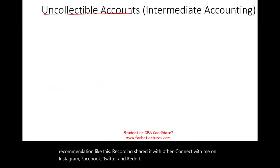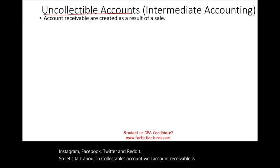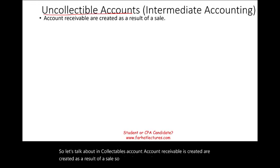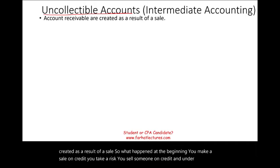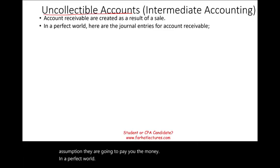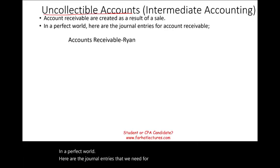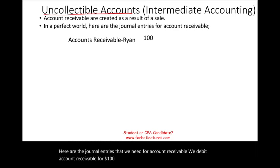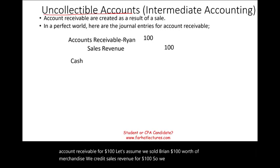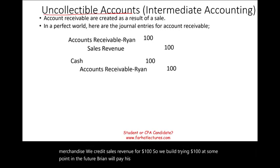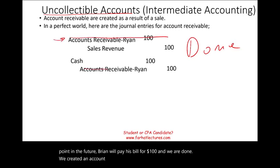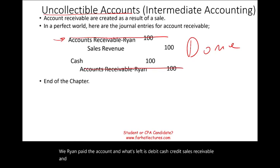Let's talk about Uncollectible Accounts. Account receivables are created as a result of a sale. You make a sale on credit, taking the risk that the customer will pay you. In a perfect world, the journal entries are simple: debit Accounts Receivable $100 and credit Sales Revenue $100 — for example, selling Ryan $100 worth of merchandise. At some point, Ryan pays his bill, and we debit Cash $100 and credit Accounts Receivable $100. That would be the end of the receivable chapter.